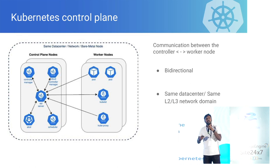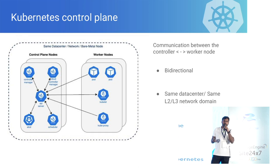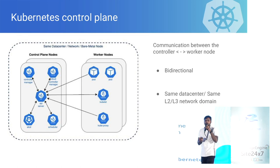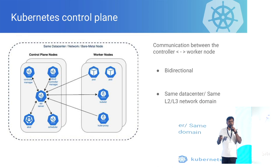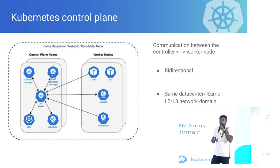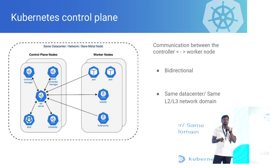Whenever a node selector selects a particular node for running a pod, the API server sends the pod spec to Kubelet to spin up the pod on that node. Similarly, whenever you use kubectl exec or kubectl logs, the user request goes to the API server, which then talks to the Kubelet API. The communication between the control plane and worker node is bidirectional and requires fast and reliable communication. Within a general-purpose use case, the control plane and worker node are in the same data center — the same L2/L3 domain — so the control plane can reach worker nodes and vice versa, and it works out of the box.